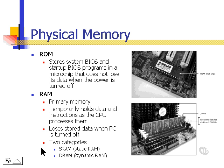There are two categories of RAM: SRAM and DRAM, and we're going to be discussing both of them. This is an example of RAM installed into an expansion board or into a motherboard.